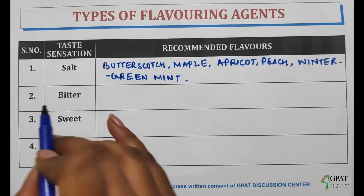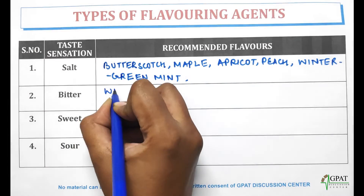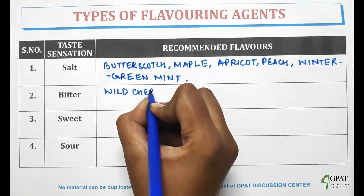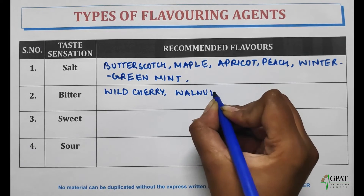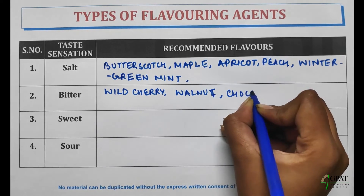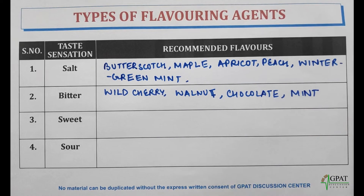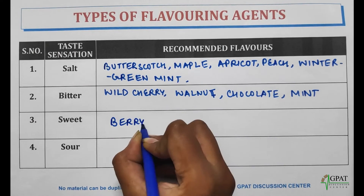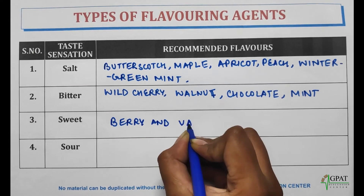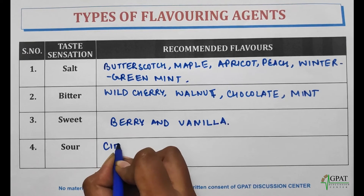The following flavors provide a salt sensation: Butterscotch, Maple, Apricot, Peach, and Wintergreen Mint. Bitter flavors include Wild Cherry, Walnut, Chocolate, and Mint. Sweet flavors include Berry and Vanilla. Sour flavors come from Citrus fruits.